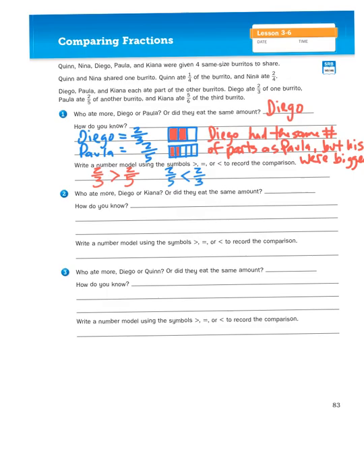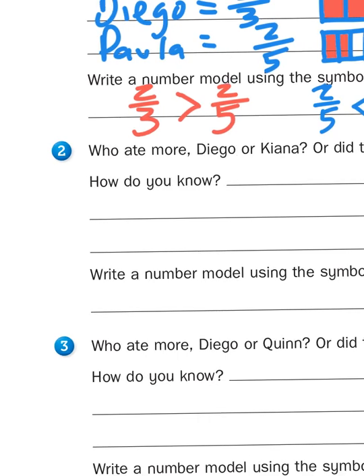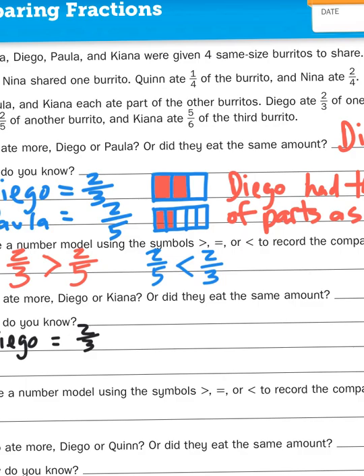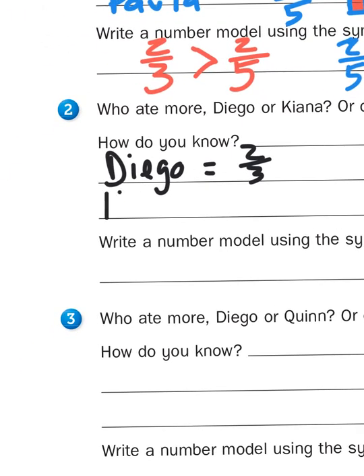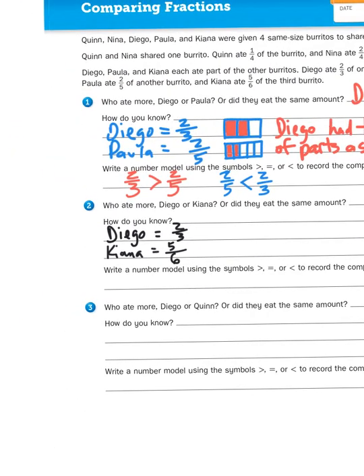Now take a look at number two: who ate more, Diego or Kiana? I know that Diego had two-thirds of a burrito. But when compared to Kiana, Kiana had five-sixths of a burrito. This causes a different problem because we don't have like numerators or like denominators. So what we need to do is come up with some equivalent fractions.